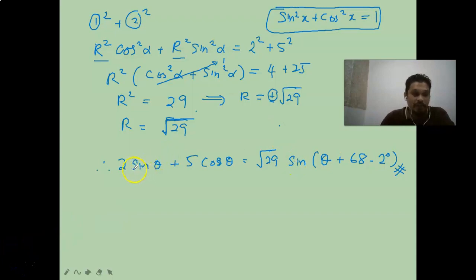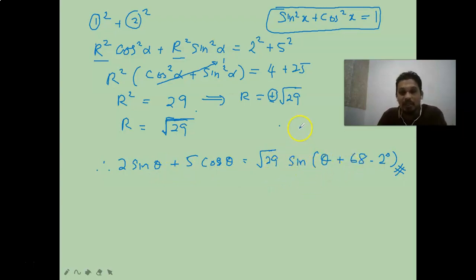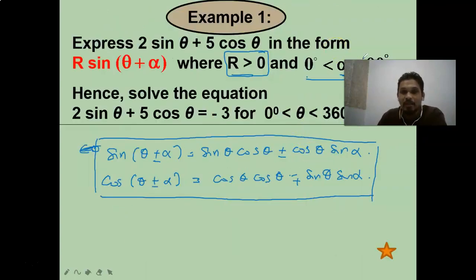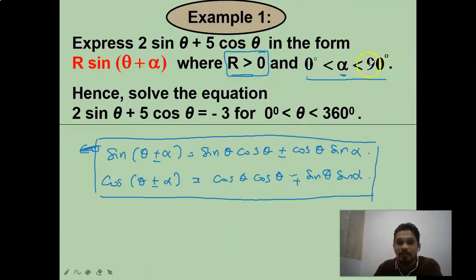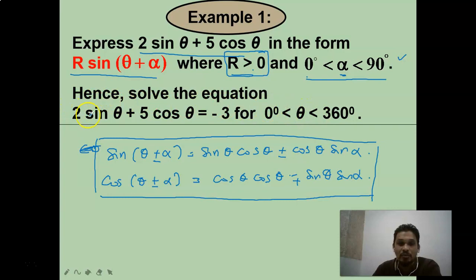This is the expression of 2sinθ + 5cosθ in the form R·sin(θ + α), with R positive and alpha between 0 and 90 degrees. We have solved the first part. Now let's look at the second part: solve 2sinθ + 5cosθ = −3, for θ between 0° and 360°.